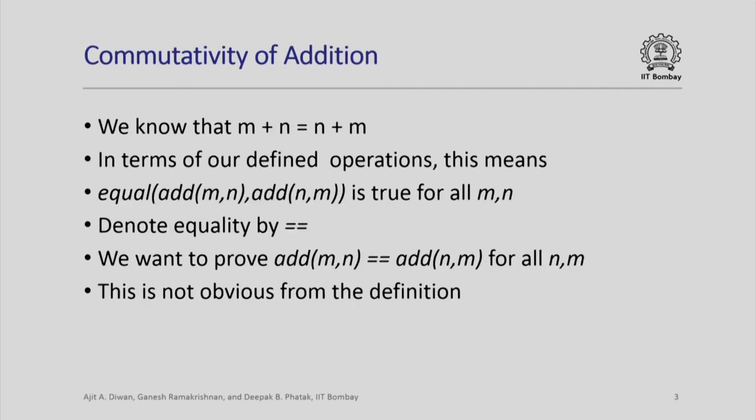We will see examples of how properties are proved. Let us look at a simple property of the addition operation which we know is familiar — that is commutativity. That means m plus n is equal to n plus m; the order in which you add does not matter. In terms of our defined operations, this means that add(m,n) and add(n,m) should give equal results. The equal operator applied to add(m,n) and add(n,m) should give true for all numbers m and n.